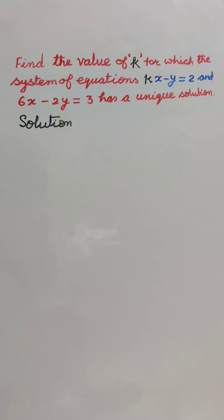Hello friends, find the value of k for which the system of equations kx minus y equals 2 and 6x minus 2y equals 3 has a unique solution.